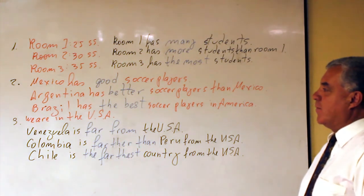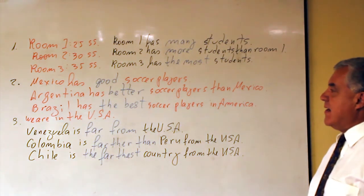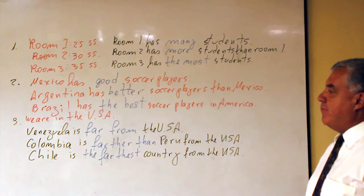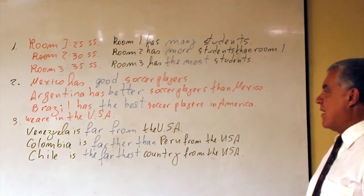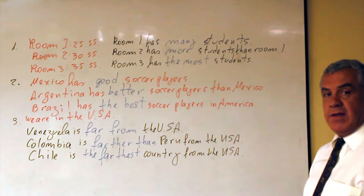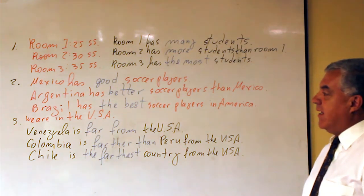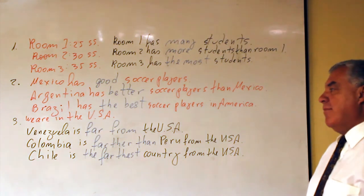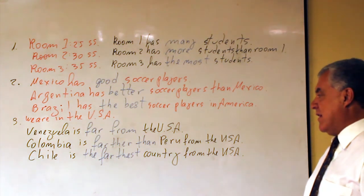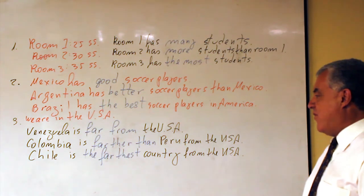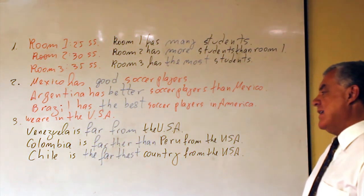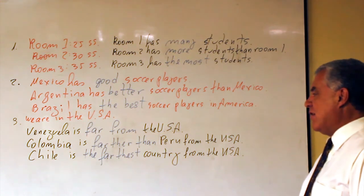Number 2. Mexico has good soccer players. Argentina has better soccer players than Mexico. And Brazil has the best soccer players in America. Now, the last one. Number 3. We are in the United States. So, Venezuela is far from the United States. Colombia is far from the United States. And Chile is the farthest country from the United States.